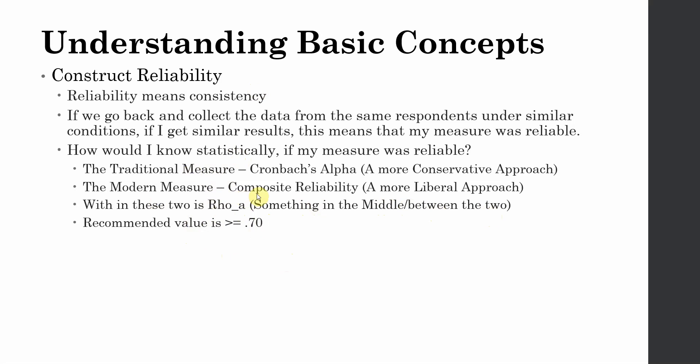Now, if your construct reliability statistic is over or equal to 0.70, maybe for Cronbach's Alpha, composite reliability, and this rho A is normally in between the two and has to be obviously over 0.70, then you say yes, your construct was reliable.